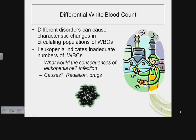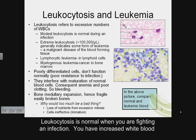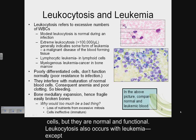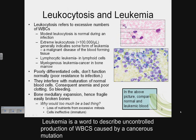Leukocytosis is a general term to describe excessive numbers of white blood cells. Leukocytosis is normal when you are fighting an infection — you have increased white blood cells but they are normal and functional. Leukocytosis also occurs with leukemia, except that with leukemia the excessive white blood cells are not normal nor functional.